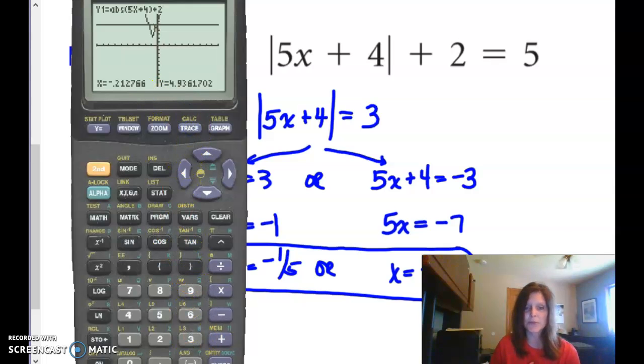I can do the same thing for the other point. Negative 7 fifths. Enter. And again, now it's blinking on the other intersection point. My y is equal to 5, where that horizontal line is. So remember to check your work. If you don't want to use your calculator, just plug it into the beginning and do the arithmetic. Let me know if you have questions.